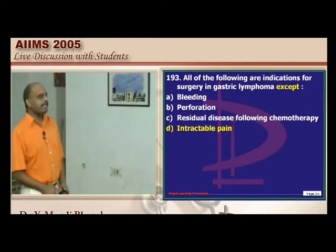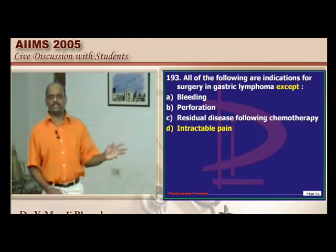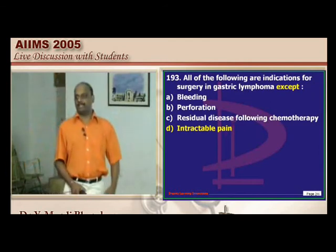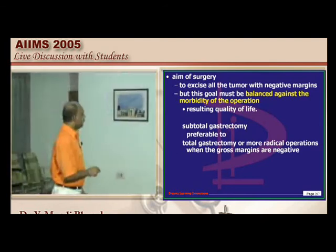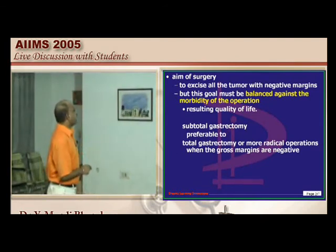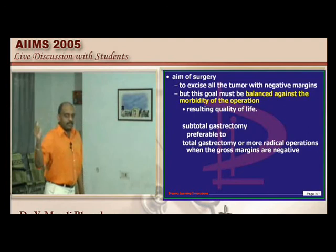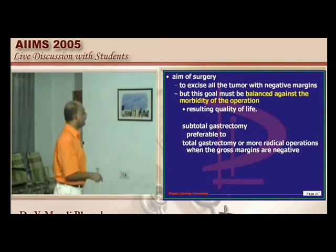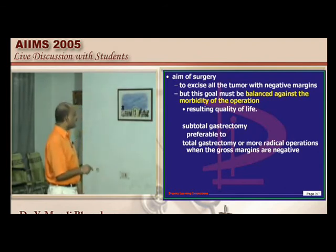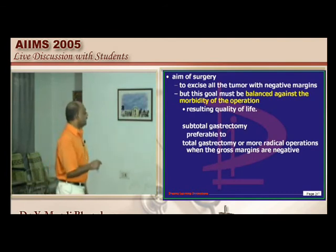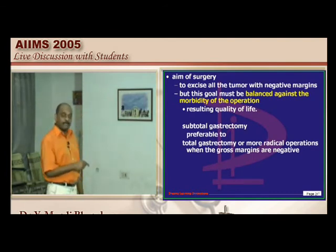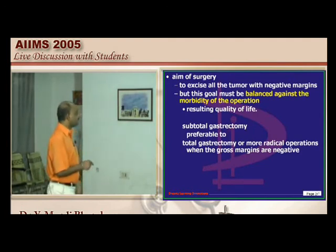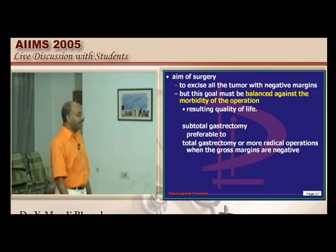For gastric lymphoma, the aim of surgery is to excise all tumor with negative margins. However, morbidity of removing the stomach must be balanced against benefit — subtotal gastrectomy is preferred over total gastrectomy. Indications for surgery include bleeding, perforation, and residual disease after chemotherapy. Intractable pain alone is not a very important indication.